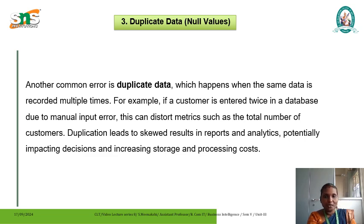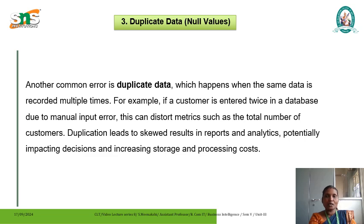The third kind of error is called duplicate data. This happens when the same data is recorded multiple times. In certain cases, a customer is entered into a database twice due to manual input error. This can distort metrics such as the total number of customers — when we have a particular customer name more than once, it will create a difference in the total count. Duplication leads to skewed results in reports and analytics, potentially impacting decisions and increasing storage and processing costs.